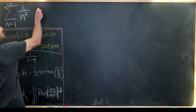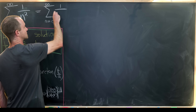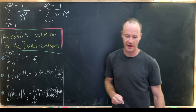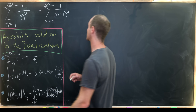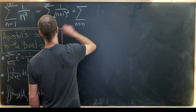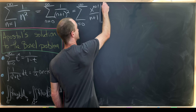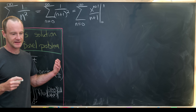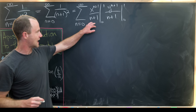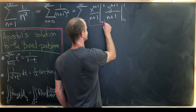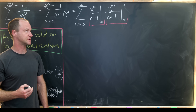The first thing I'll do is re-index this sum so that it starts at 0: the sum from n equals 0 to infinity of 1 over (n+1) squared. Now I'll write each copy of (n+1) slightly differently, expressing 1 over (n+1) squared as x to the (n+1) over (n+1) evaluated from 0 to 1, times y to the (n+1) over (n+1) evaluated from 0 to 1. We can think of each of these evaluations as zeroth integrals, and pass them to single integrals by taking the derivative.